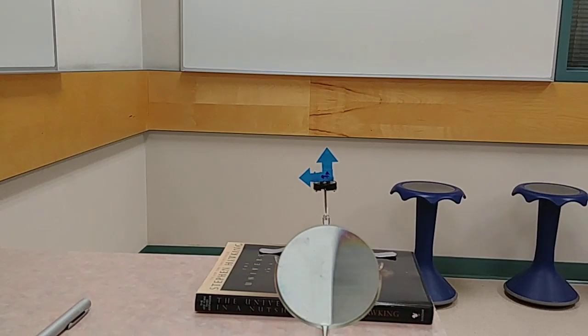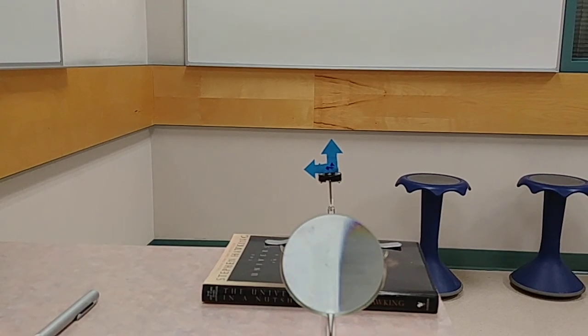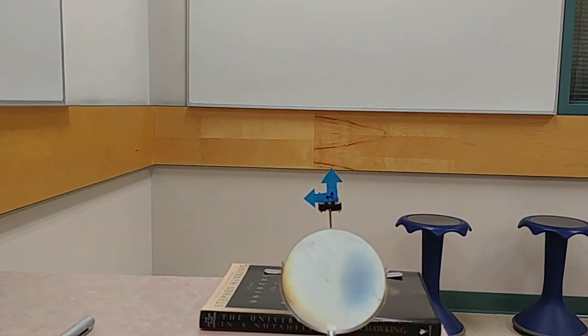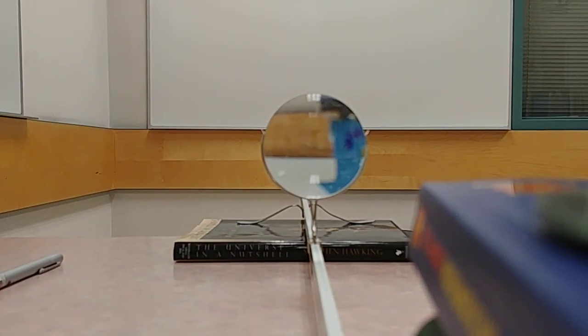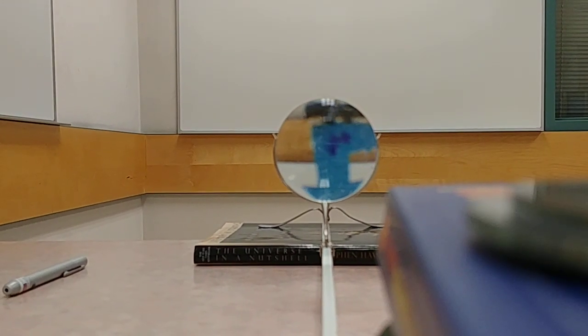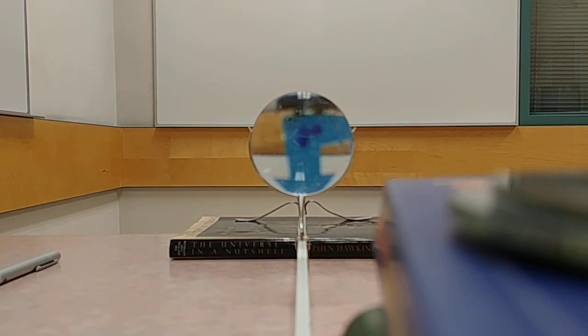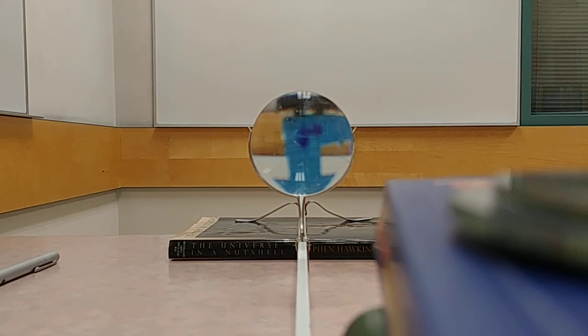So you can see down here that there's an object pointed up and to the left. I put tiny little arrows in there too so you can see what happens to those arrows. You can see that the image gets magnified as it goes through this lens here.